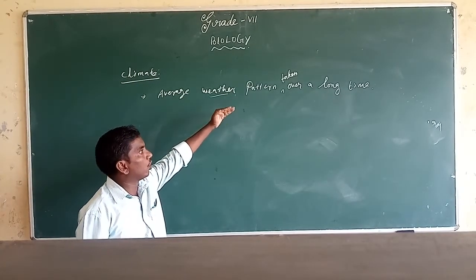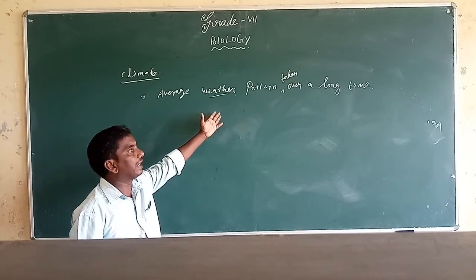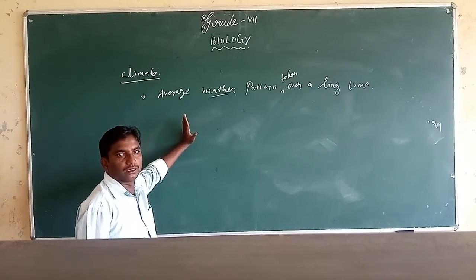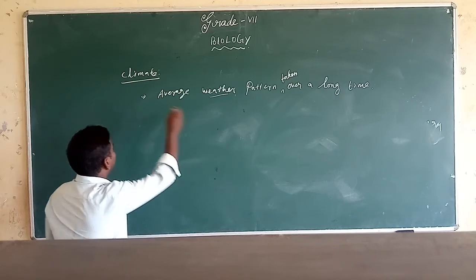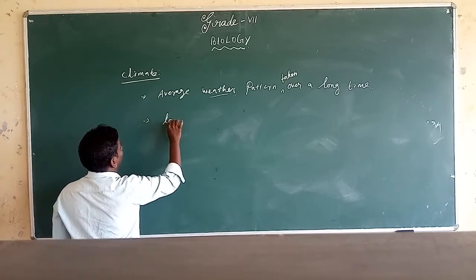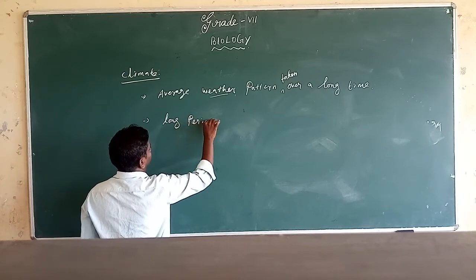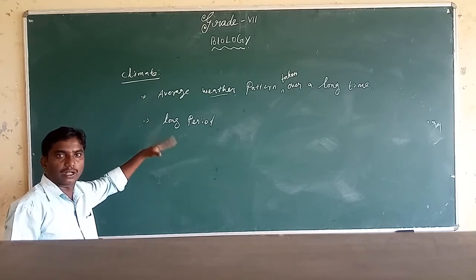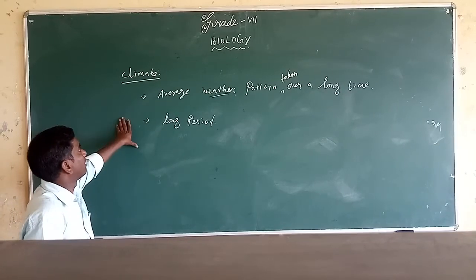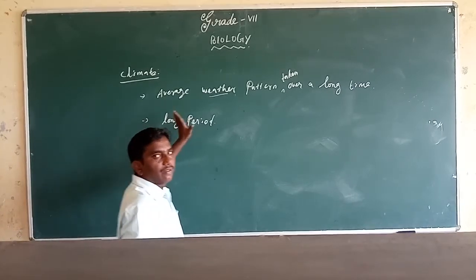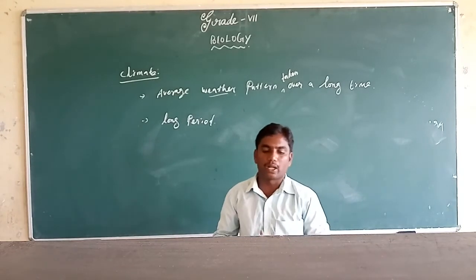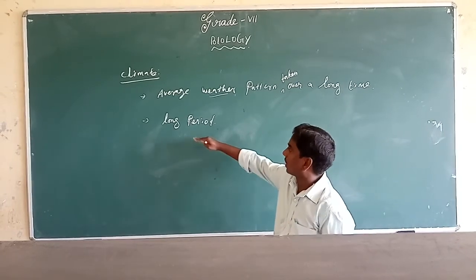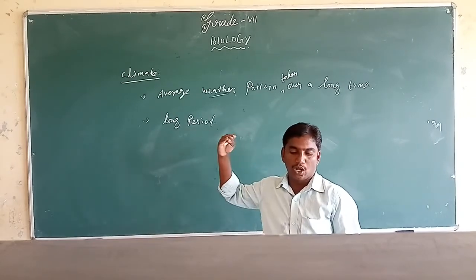The average weather pattern taken over a long period — for example, 5 years, 10 years, 20 years, 30 years, 40 years, or even 100 years — that is called climate. Climate occurs over a long period, not a short period. It could be more than 20, 50, 70, or 100 years.